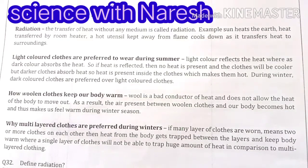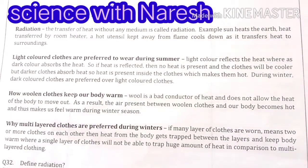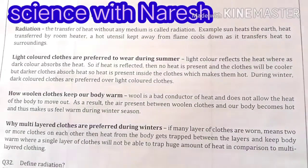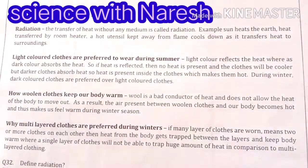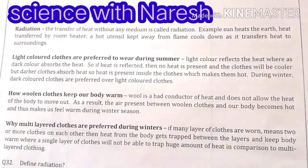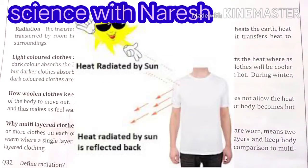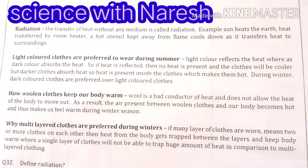A hot utensil kept away from the flame cools down. Why does the utensil kept away from the flame cool down? It is because the heat from the utensil is transferred to the atmosphere.